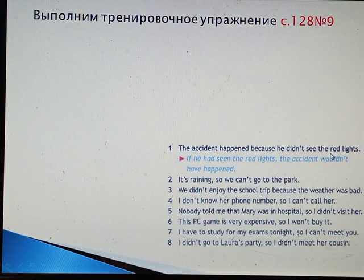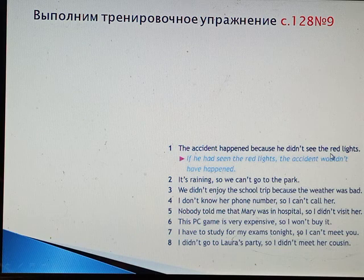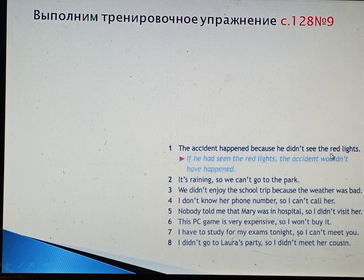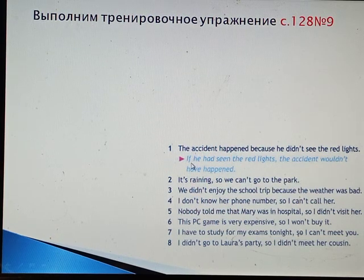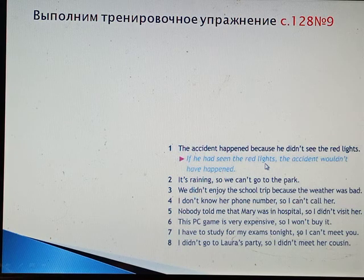Авария произошла, потому что он не увидел красного света. То есть, если бы он его увидел, несчастного случая не было бы. Но всё уже произошло, он может только сожалеть. Мы работаем в третьем условном. If he had seen the red lights, the accident wouldn't have happened.